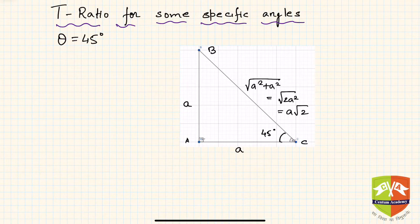In this session we are going to discuss the different T-ratios for theta equals 45 degrees. What does it mean? If there is a triangle ABC where angle A is 90 degrees, angle C is 45 degrees, and by angle sum property angle B is also 45 degrees, then what will be the values of different T-ratios like sine 45, cosine 45, and so on?